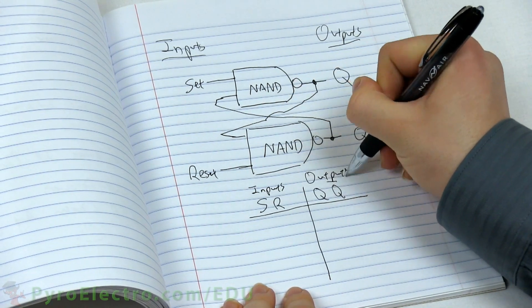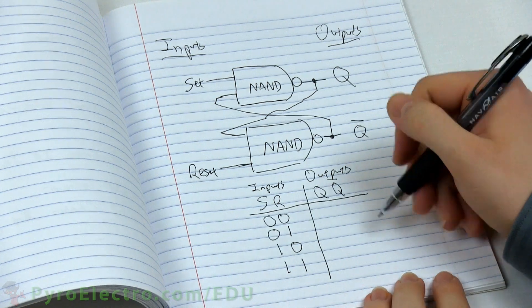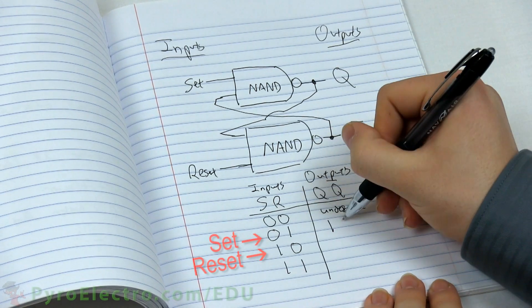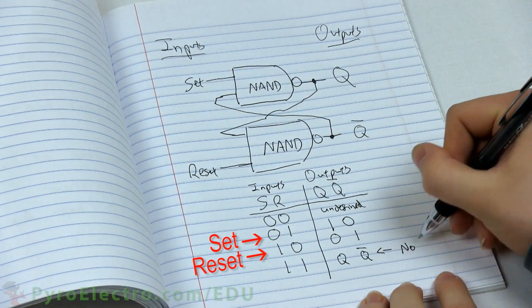However, everything is reversed. A change from logic 1 to logic 0 is what triggers a set or reset, as you can see in the truth table I've just drawn.